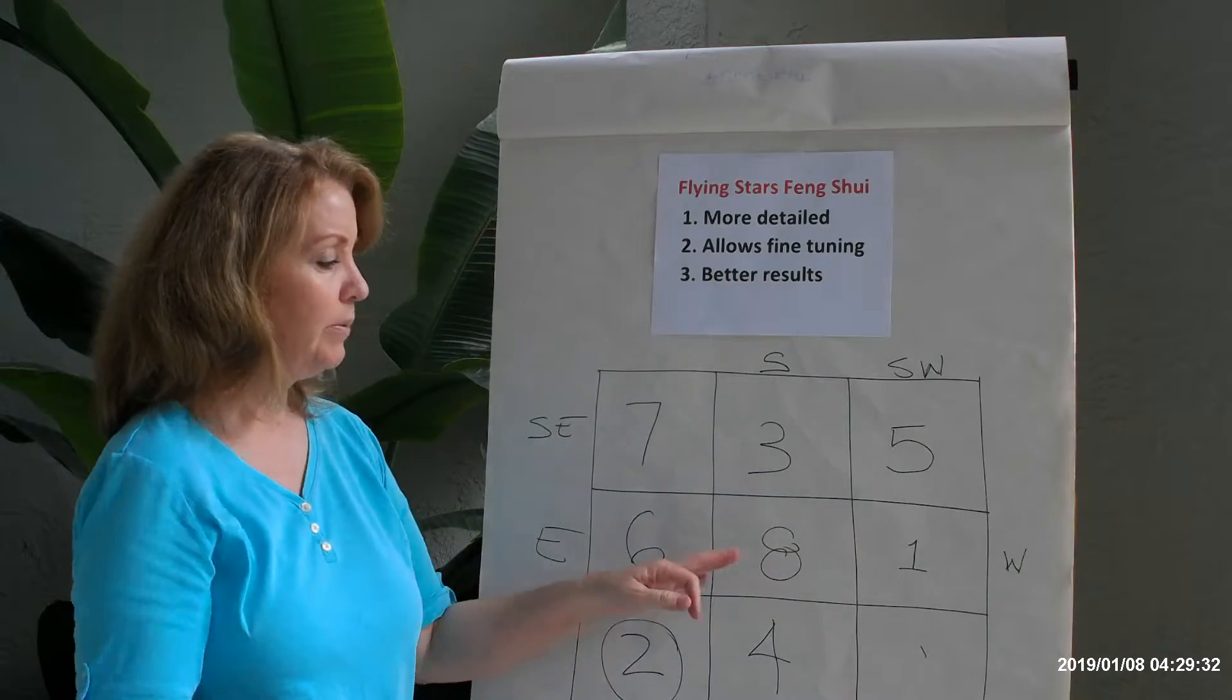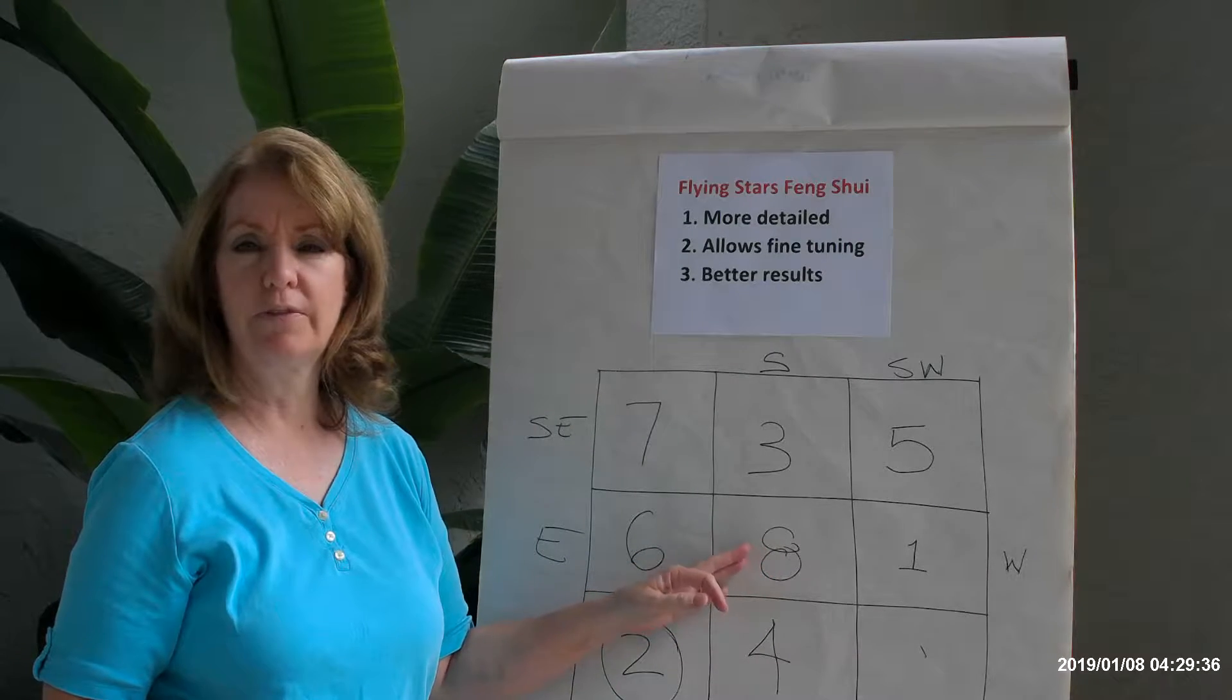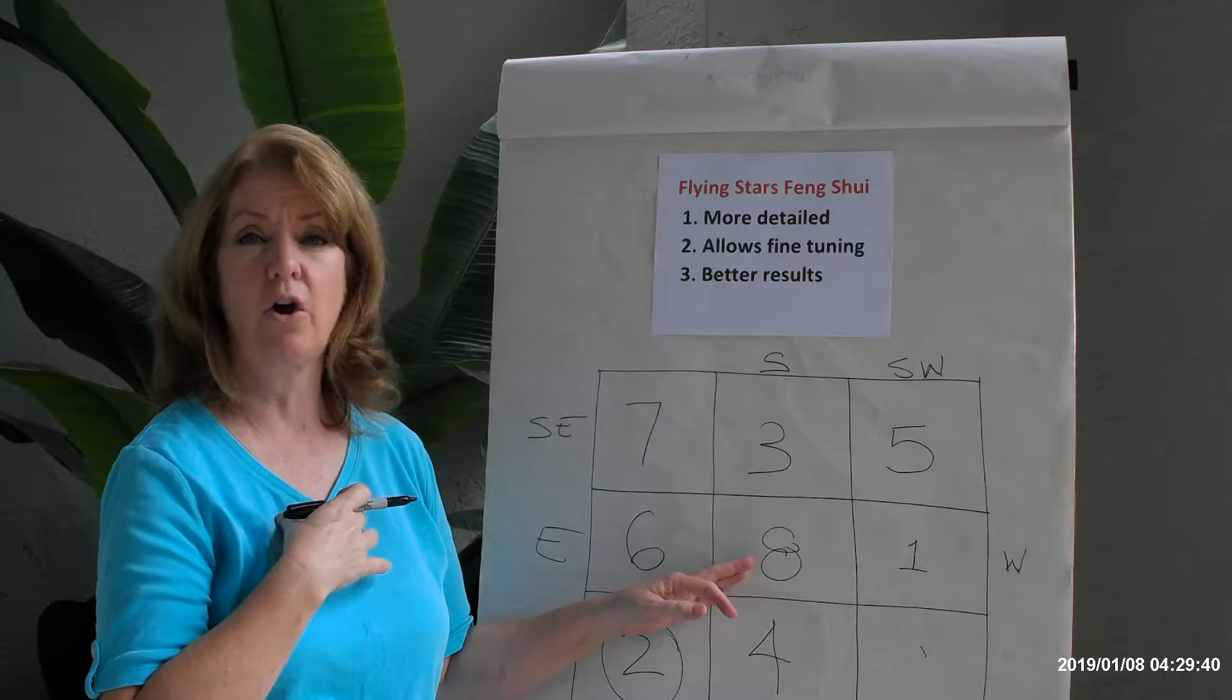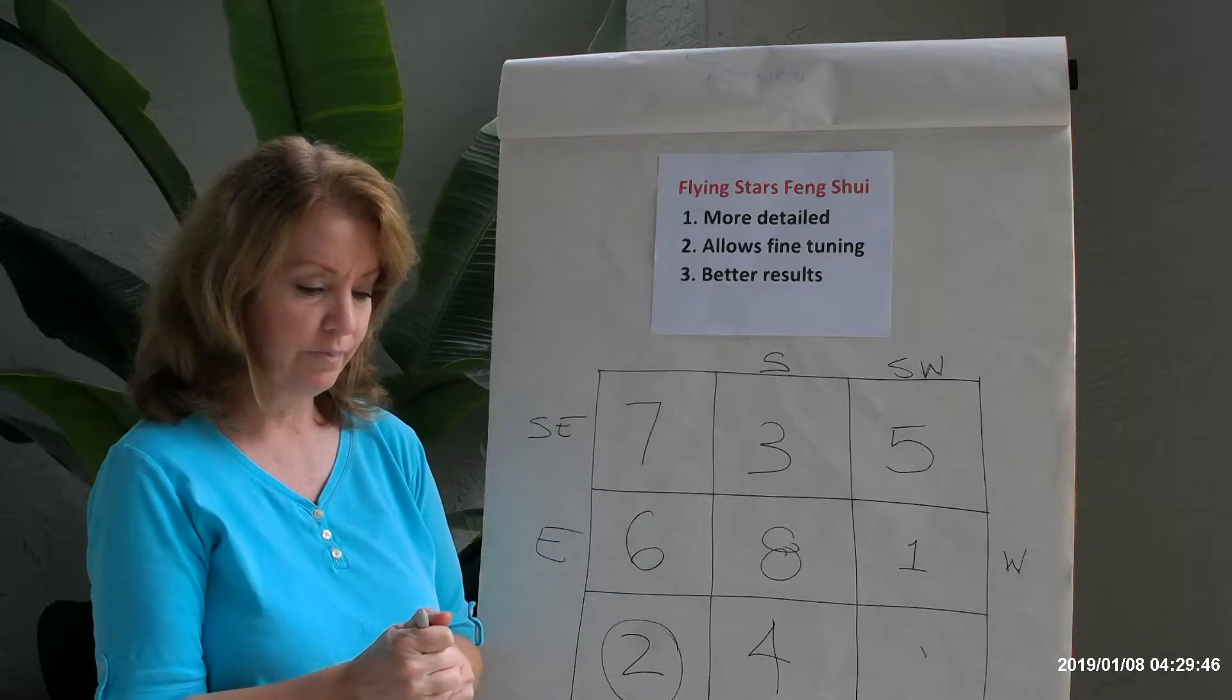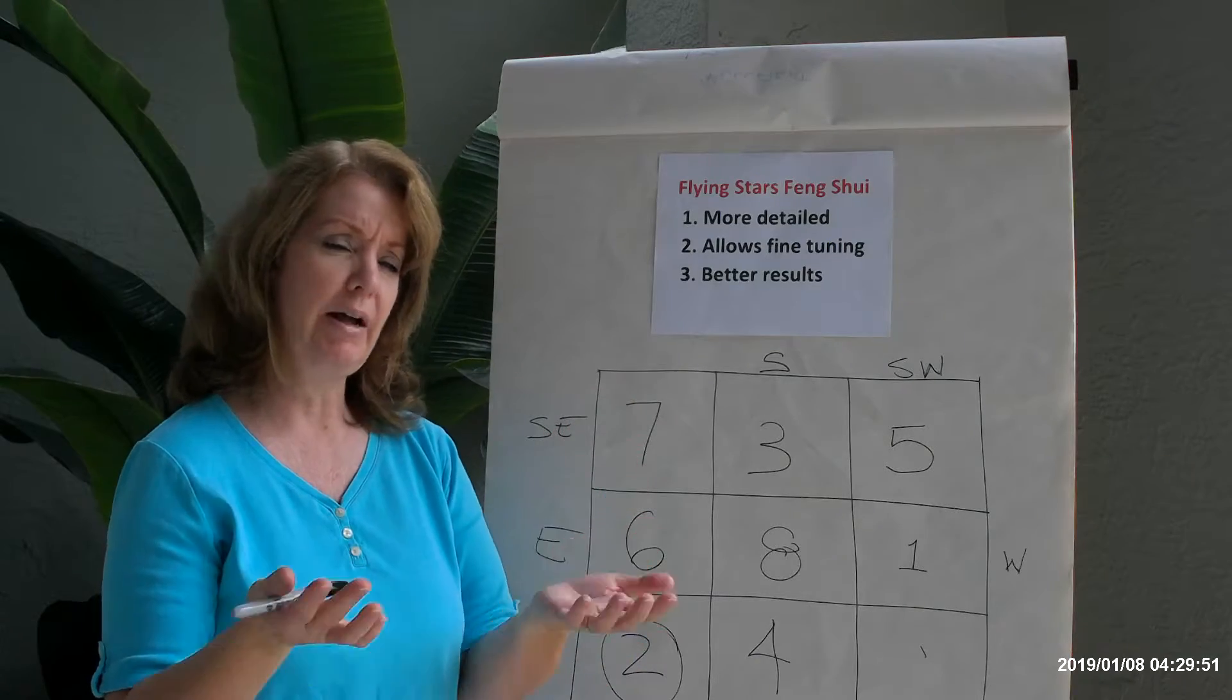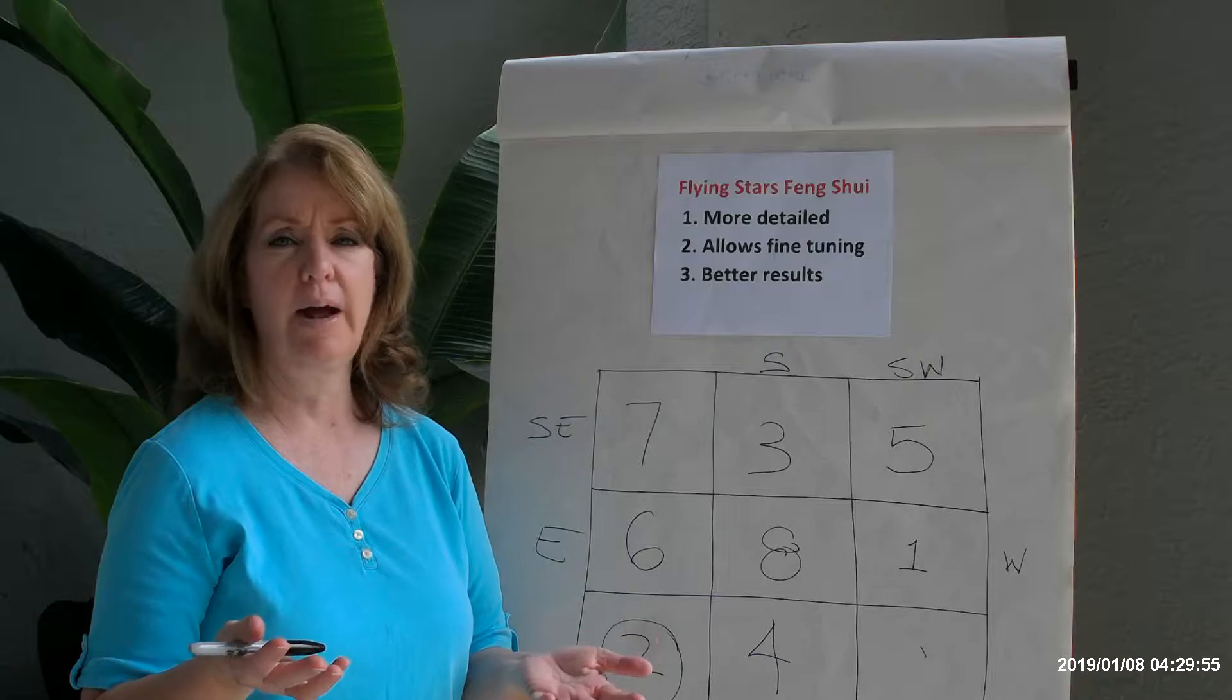So the center represents balance. In some forms of feng shui it represents health, it represents the heart, meaning the heart of your home, the heart of your family. Things related to yin and yang, bringing both the male and female energy so you've got that balance in life. And number eight is about creating long-term balance.